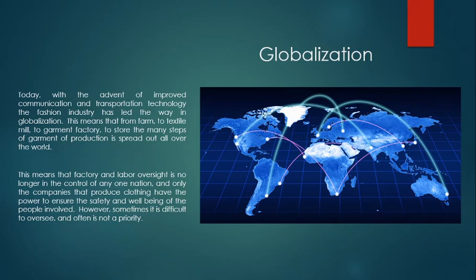A cotton farm might be in India, the textile mill in Korea, the garment factory in China, and the product sold in London. No one country can really be in charge of all labor standards, and it can differ from country to country. Since there is no single overseeing entity over the whole supply chain, it's very hard to put in rules and regulations that will ensure worker safety.